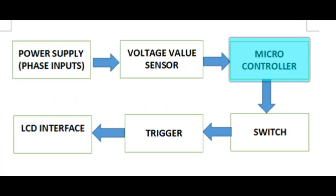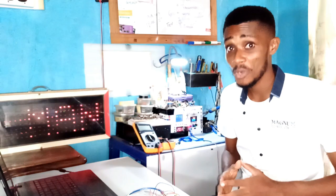The next block diagram is the microcontroller, switch trigger, and the LCD interface. These parts are more or less working the actual code and basic analog electronics so let's dive into the project by assembling the components.